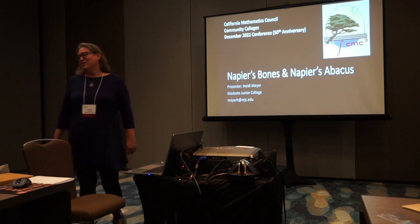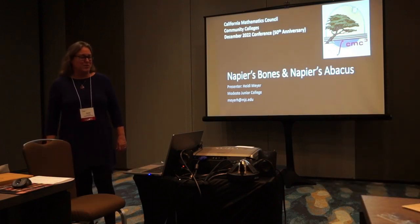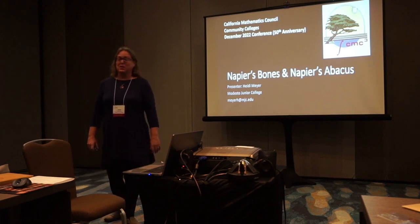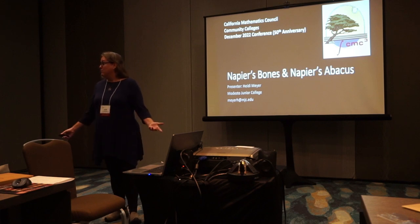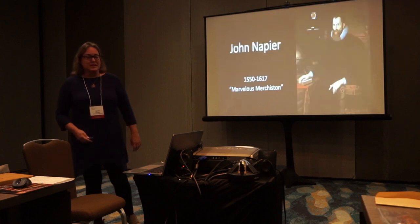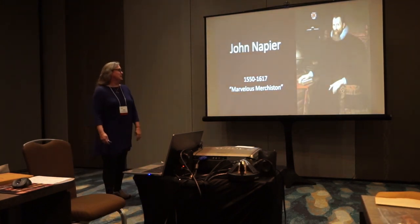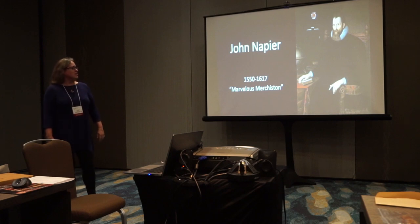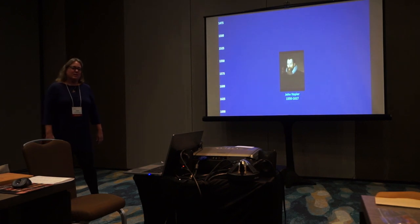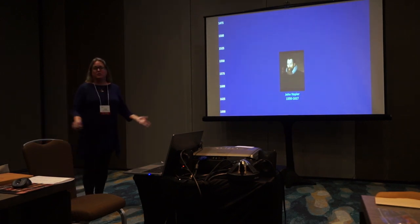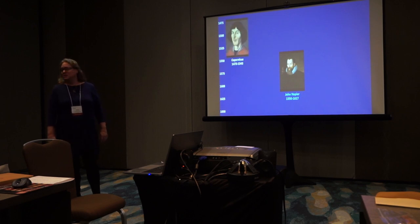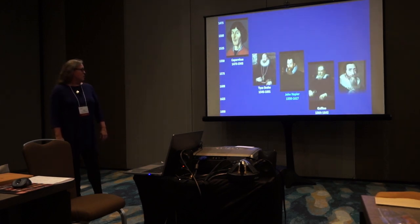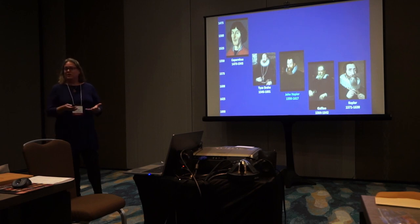I am so happy to be sharing with you about John Napier, a mathematician that I'm very impressed with. We'll be spending a lot of time with his calculating devices — the bones and the abacus — but I do want to talk a bit about his life and put him in context. He was born in 1550 and died in 1617. His nickname is 'Marvelous Merchiston.' In terms of those dates, there was a great deal going on in astronomical discovery, with contemporaries like Tycho Brahe, Galileo, and Kepler.